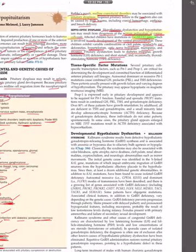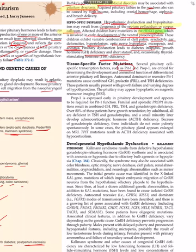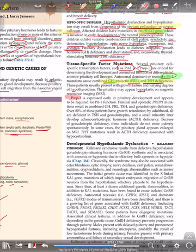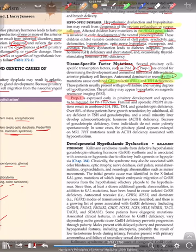Regarding tissue-specific transcription factor mutations: Pit-1 and Prop-1 are critical for development and maintaining function of differentiated pituitary cell lineages. Autosomal dominant or recessive Pit-1 mutations cause GH, prolactin, and TSH deficiencies, leading to growth failure and varying degrees of hypothyroidism; the pituitary may appear hypoplastic on MRI. Prop-1 is expressed early in pituitary development and is required for Pit-1 to function.